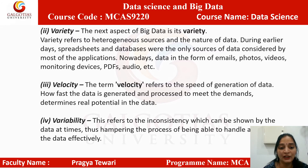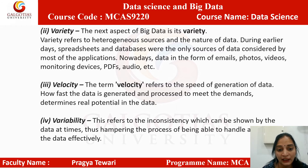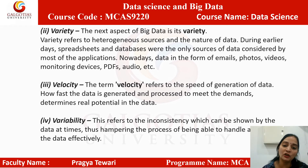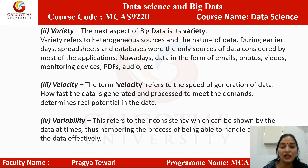Velocity: the third characteristic of big data is velocity. The term velocity refers to the speed of generation of data — at what rate the data is generated. How fast the data is generated and processed to meet the demands determines the real potential in the data. Variability: this refers to the inconsistency which can be shown by data at times, hampering the process of handling the data effectively.